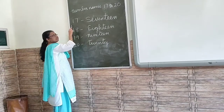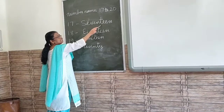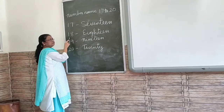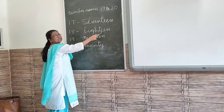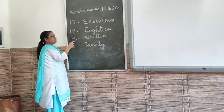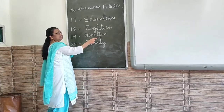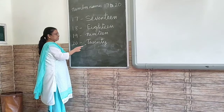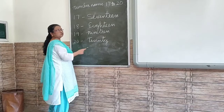Here. 17: S, E, V, E, N, T, W, E, N. 17. 18: E, I, G, H, T, W, E, N. 18. 19: N, I, N, E, T, W, E, N. 20. 20.